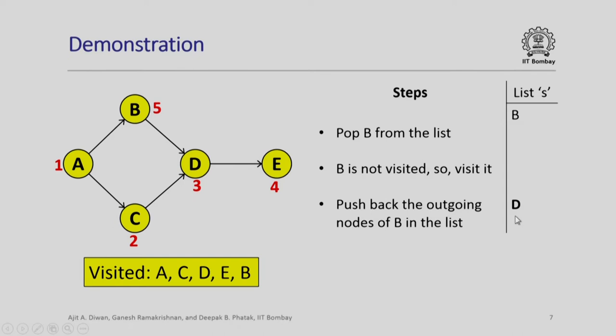Now next we examine what is there in the list. We pop D out, but notice that it is already visited. Now there is nothing left in the list. That means all nodes are traversed successfully because the list is empty. Please note that the visited nodes in the order in which they are visited, which we have been showing on every slide, will have A, C, D, E, B as the nodes, which is the proper sequence for a depth first search.